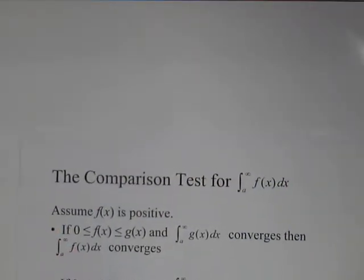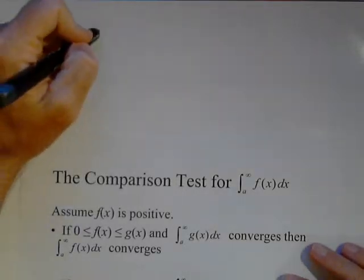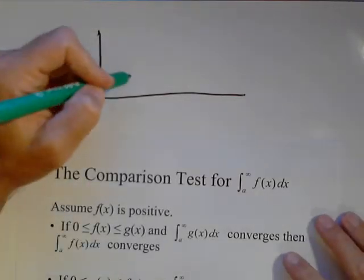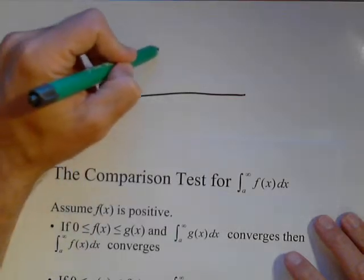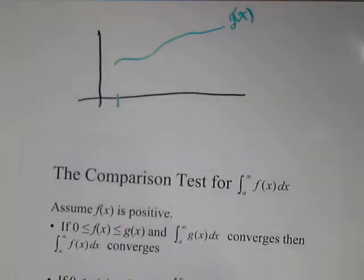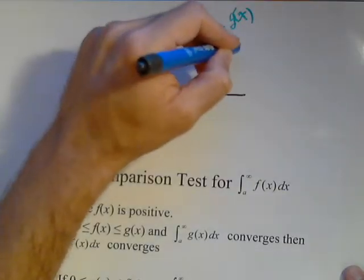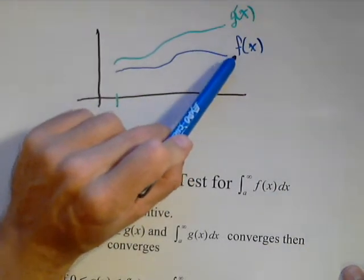So in this situation, what we have is we have our function g of x. And in this case, it's nice to think about it as area. So our function g of x going from a to infinity, so we'll put in a here. So here's g of x. Now, if we can prove that it is always greater than f of x, then if g of x converges, then f of x must converge.